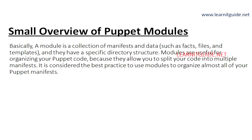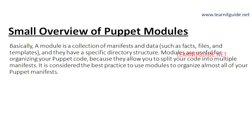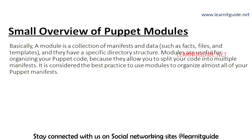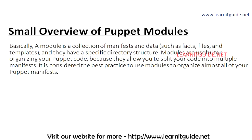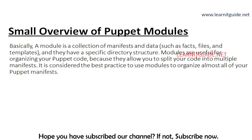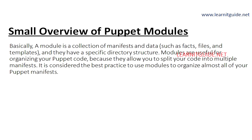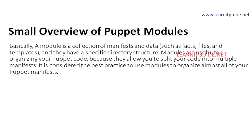A simple module is a collection of manifests with a specific directory structure. We have seen what is a manifest file and how to do automation tasks using a manifest file. So a module is a collection of manifests — we put all the manifests together in a specific directory structure to organize our code. We will tell you the difference between modules and manifests in the next slide.